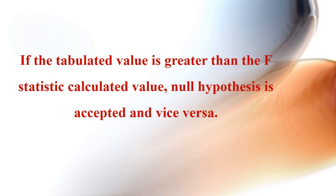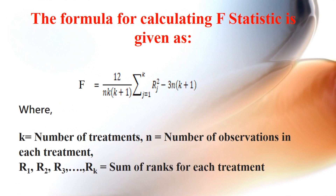The formula for calculating the F-statistic is given as follows, where k is the number of treatments; n is the number of observations in each treatment; and r1, r2, r3, ..., rk represent the sum of ranks for each treatment.